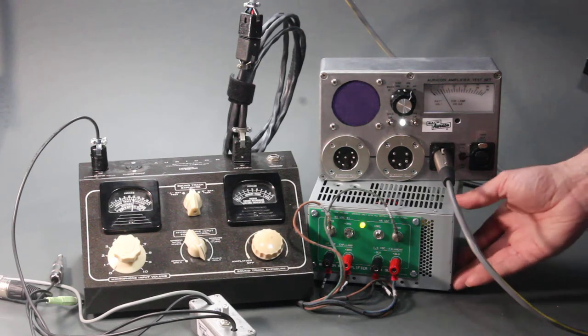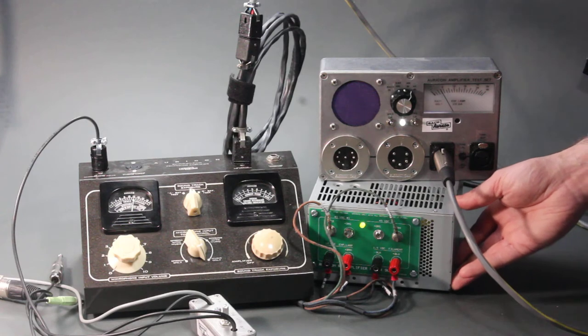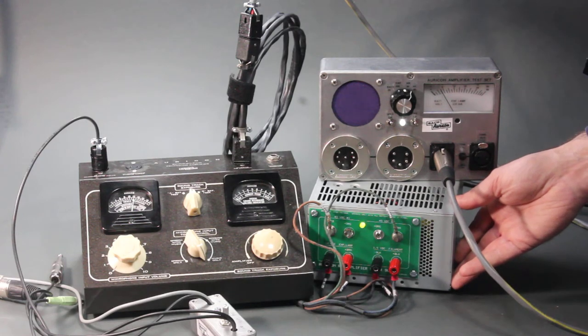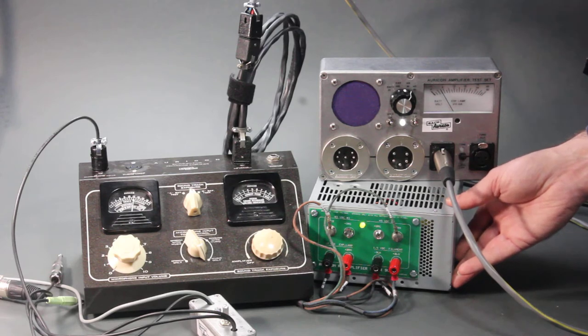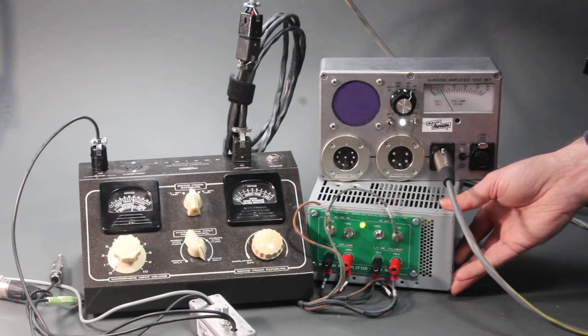And then down below of course is the battery eliminator power supply used to run the amplifier. This runs from 120 volts AC the same as the camera does. So instead of hauling batteries around you could use this power supply instead.